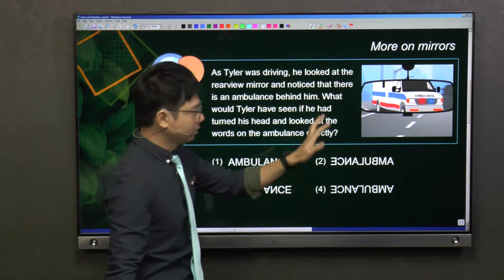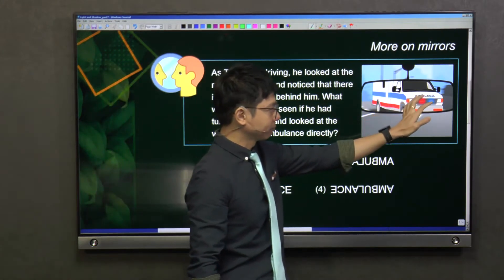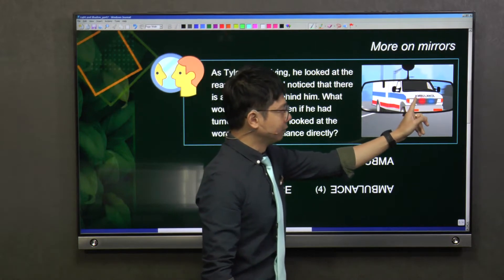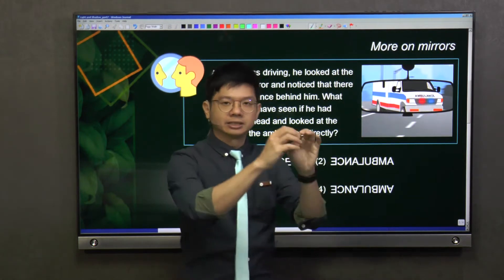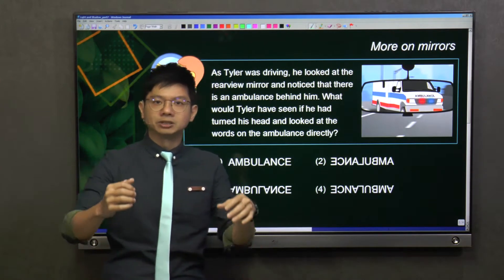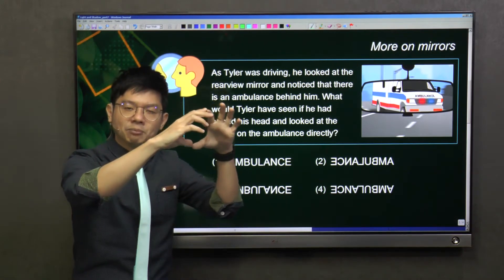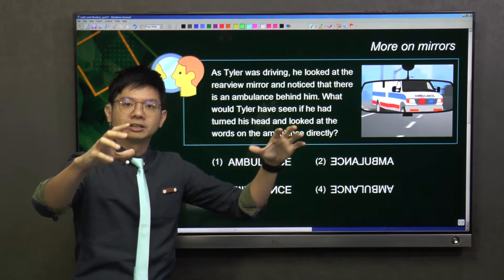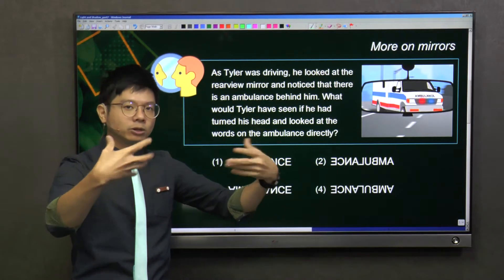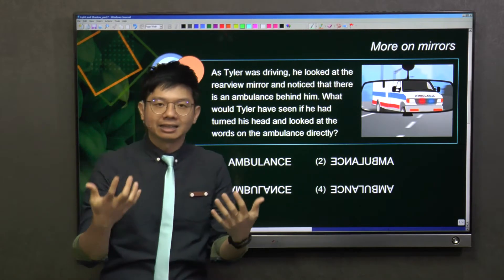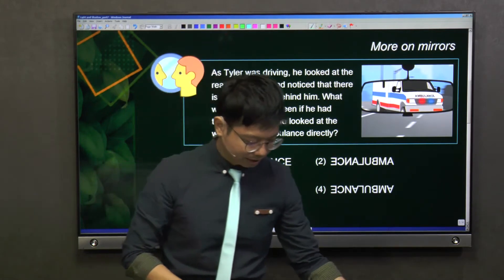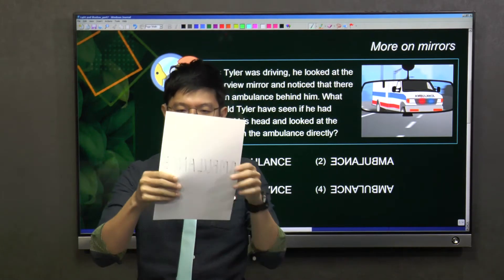On the rear mirror, when Tyler looks into it, it reads 'ambulance' — okay, very nice. But do you realize that the word 'ambulance' is always printed at the front of the car? When you look at it directly, the letters look very weird. In fact, it looks something like this.